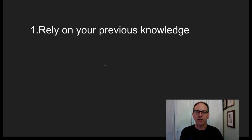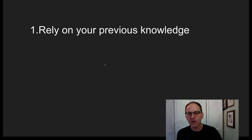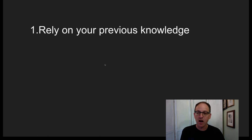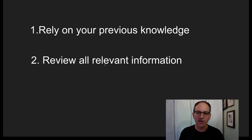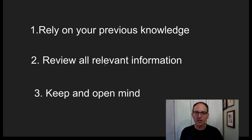Some steps to critical thinking. Start first by relying on your previous knowledge — what have you learned about it before? What things have you done in the past that you can use as experience for the situation now? Review all the relevant information. So if you're doing something on cooking, you're not going to be studying moon and rock samples. You should use only the information that's relevant. And lastly, keep an open mind. That's probably the hardest thing to do, and we'll talk about each of these three.